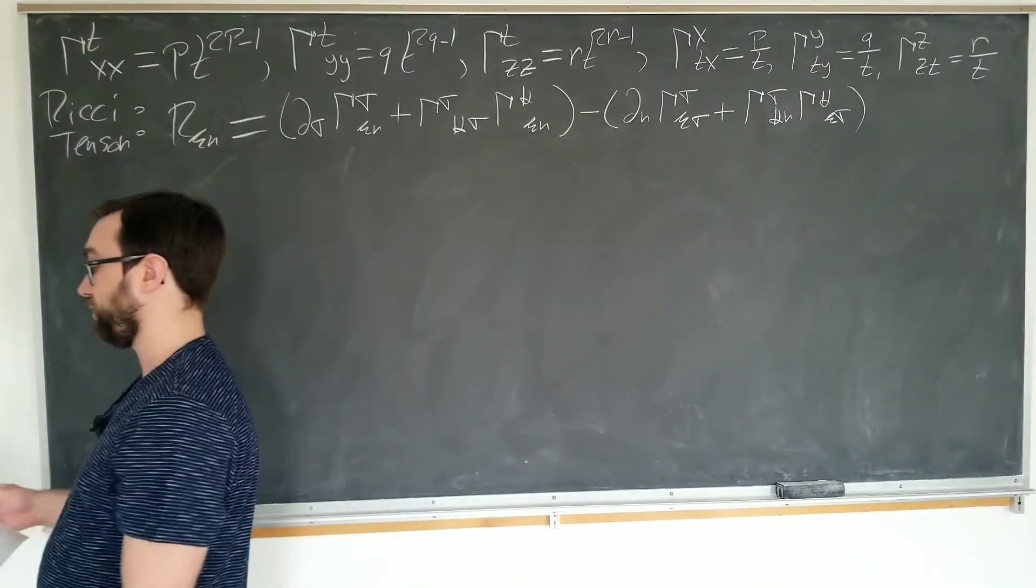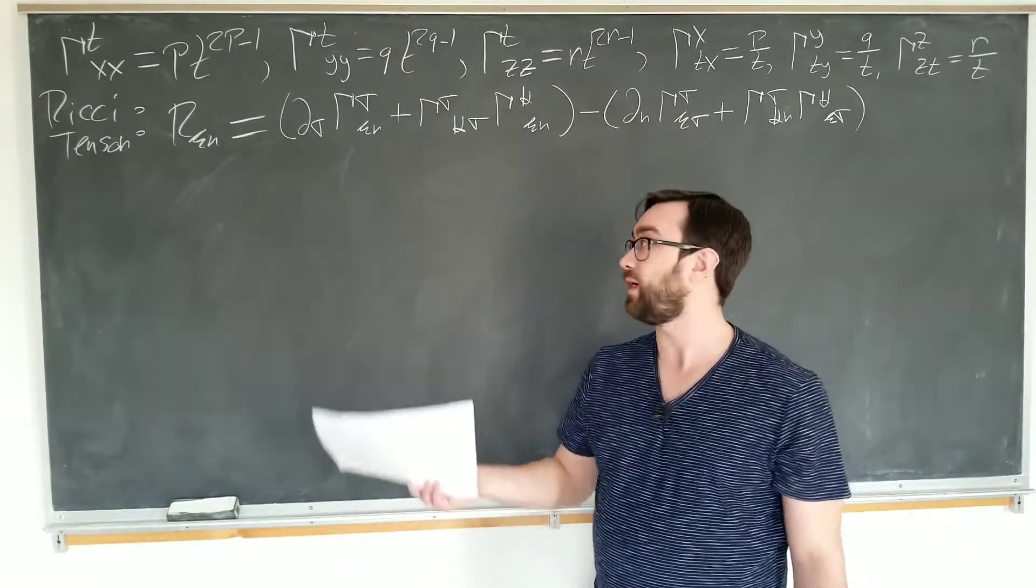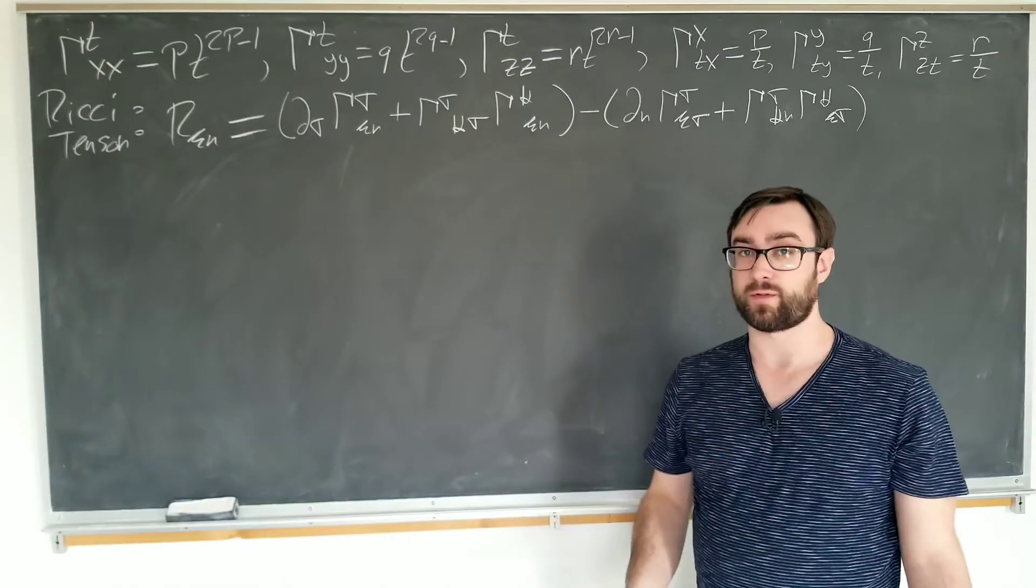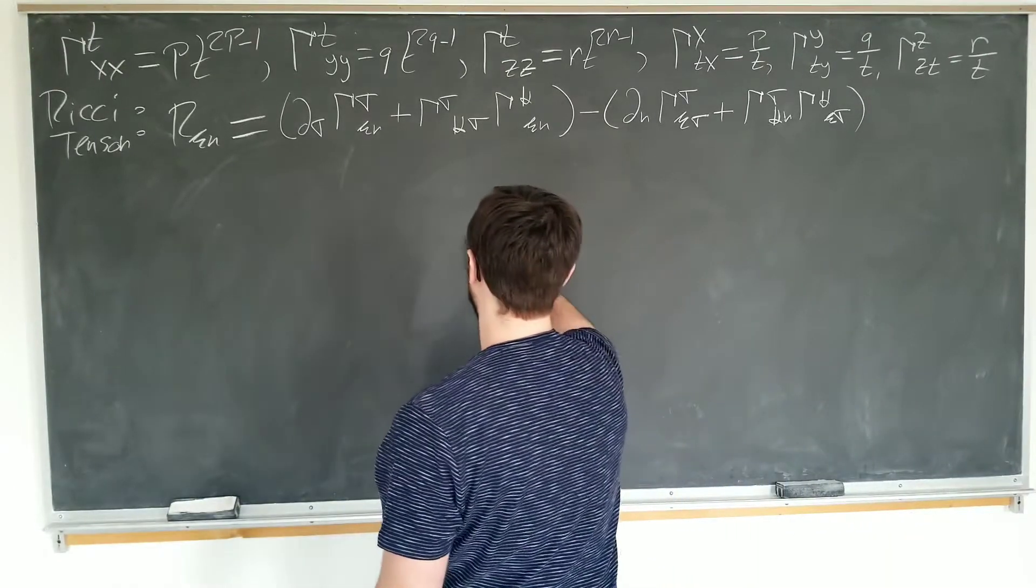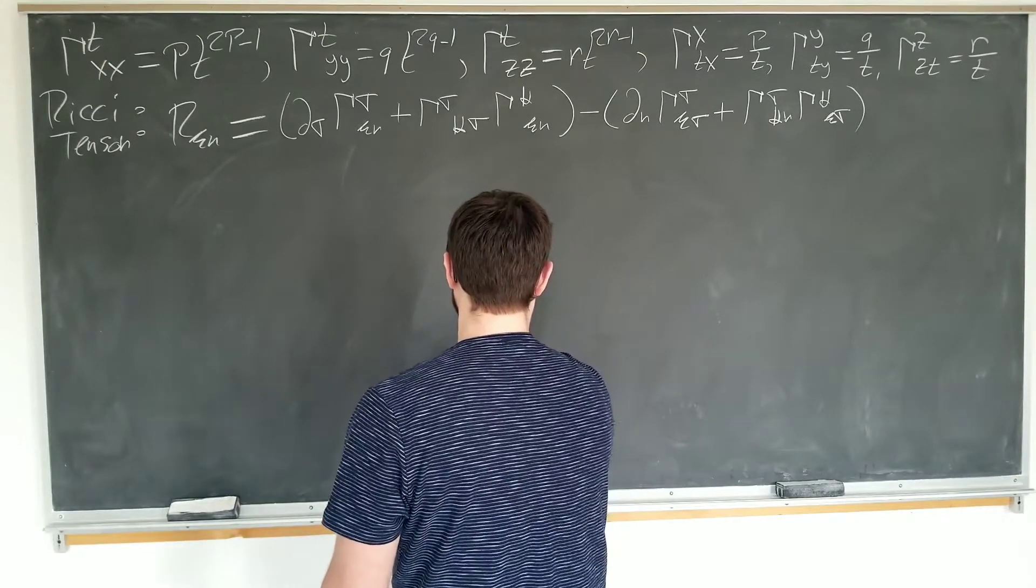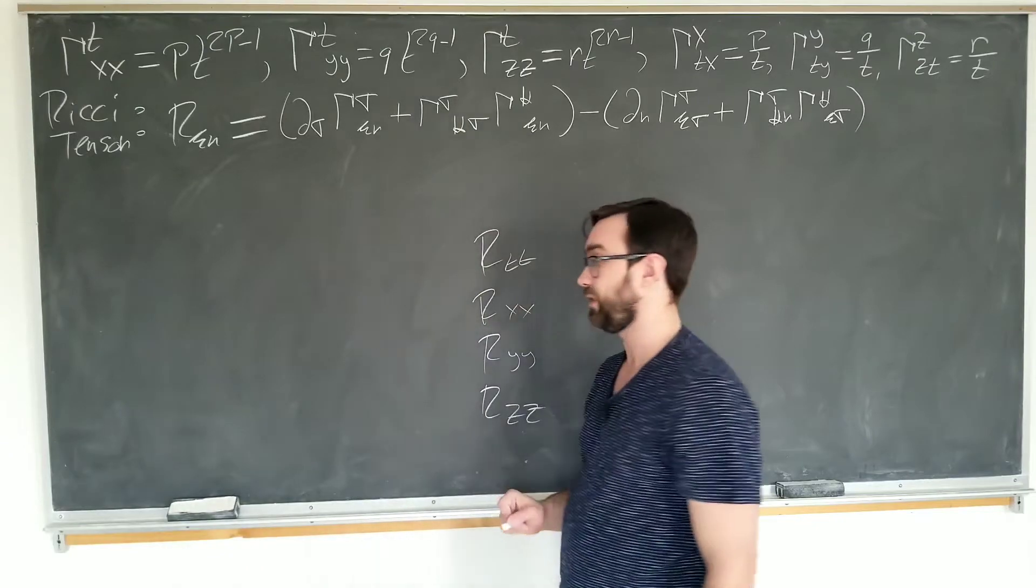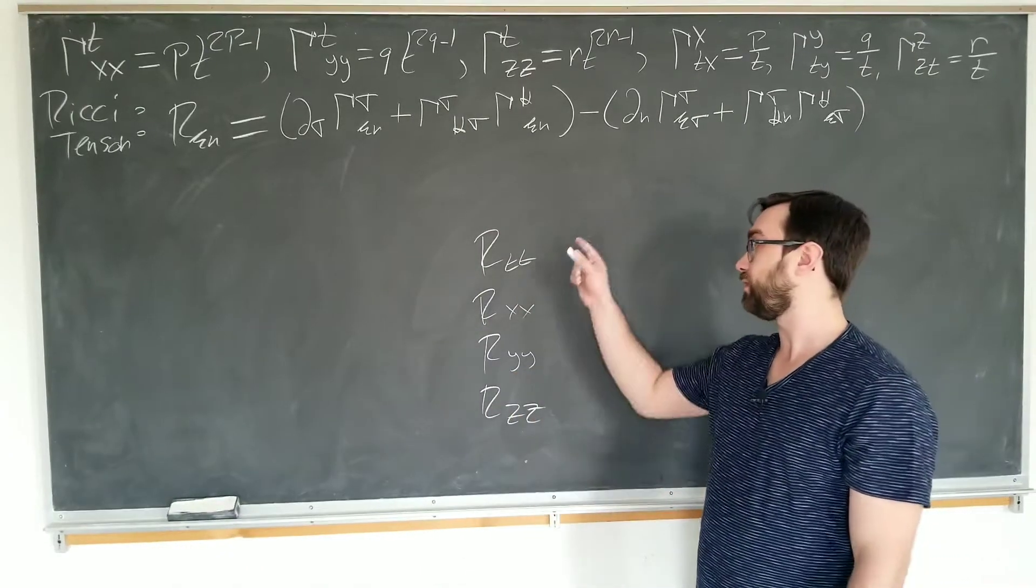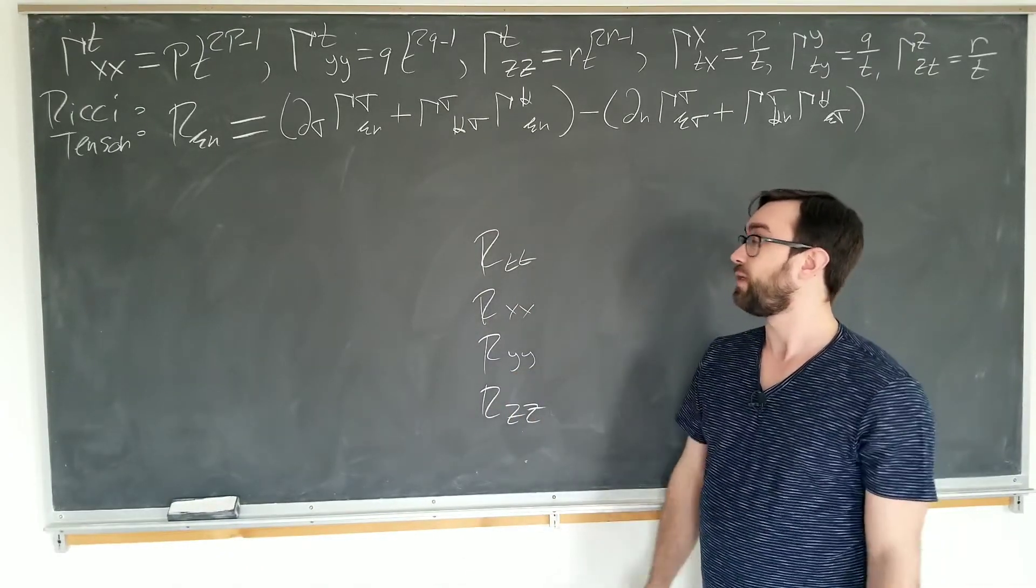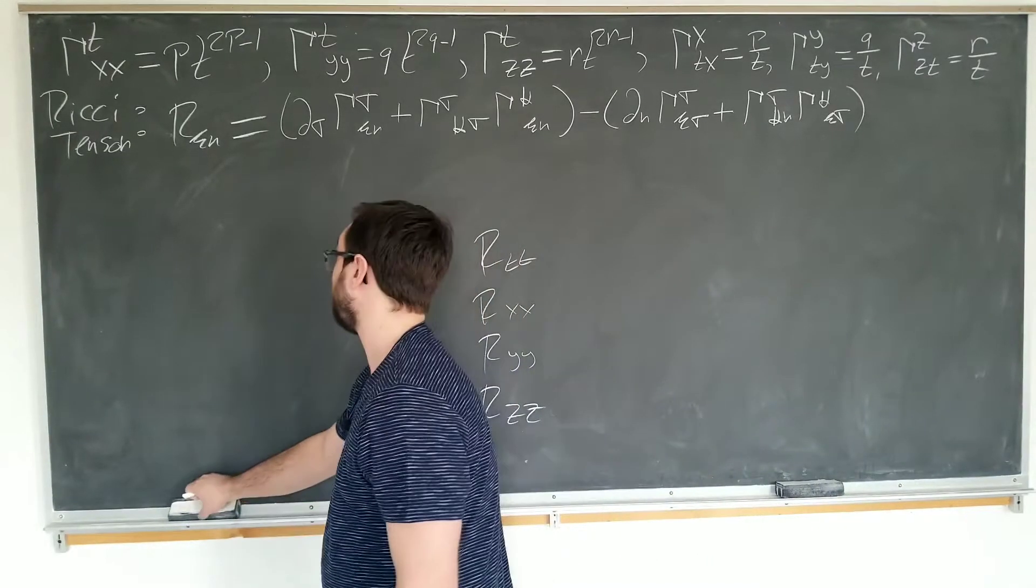Alright. So here's how it works. You basically know from experience, or because I'm telling you, that it has to be diagonal. So there's only four things to calculate. There's just R_TT, R_XX, R_YY, and R_ZZ. You just know from experience that it has to be diagonal. So you calculate these bad boys and you set them equal to zero. And that's what we're going to do now.